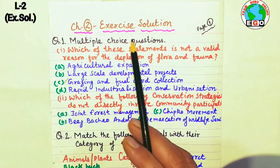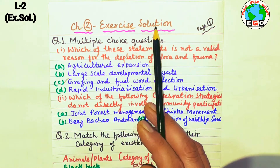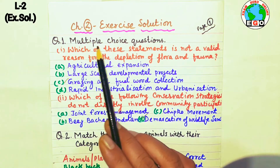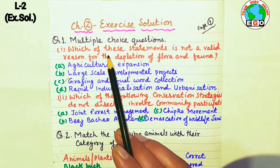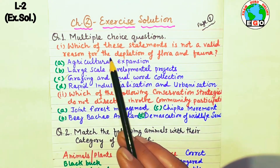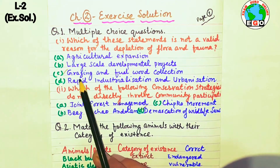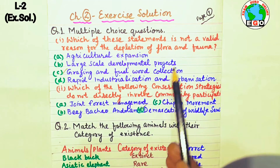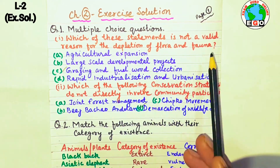Hello students, today we will solve Chapter 2 exercise question number one — multiple choice questions. Which one of these statements is not a valid reason for the depletion of flora and fauna? Grazing and fuel wood collection is not a valid reason for the depletion of flora and fauna.